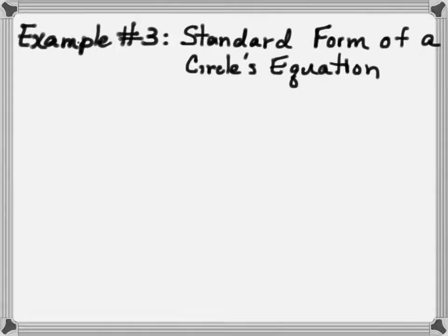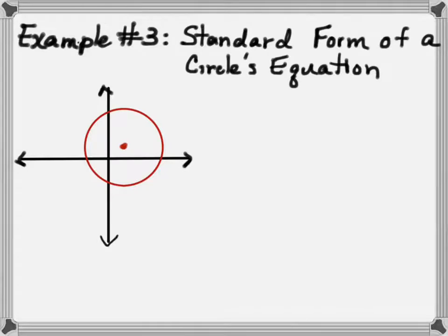A standard form of a circle's equation. I'm going to draw a little circle here. And the center of the circle is going to be at h, k. Those are the two letters that we generally use for centers of things. And the radius connects the center to a point on the circle, which is going to be just x, y. And so the equation in standard form is going to be the quantity x minus h squared plus the quantity y minus k squared equals r squared.